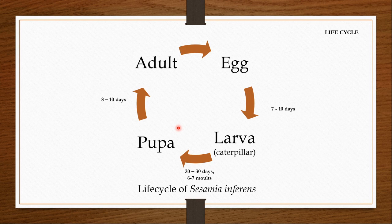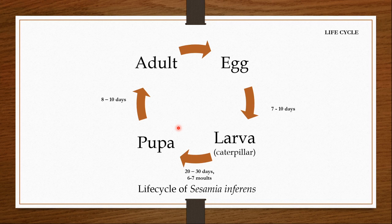There can be 2 to 3 generations per year, and according to some literature even 4 to 5 generations. This depends on the climate. Sesamia inferens has been reported from many parts of the world, particularly Asia. In colder climates this pest will have fewer generations and take longer to develop, while in warmer climates it will have a shorter lifespan and more generations in a year.